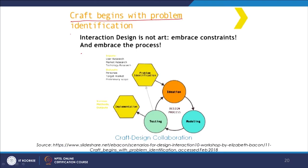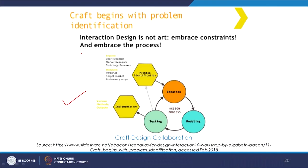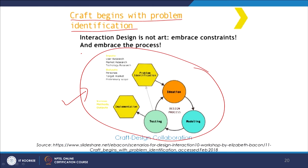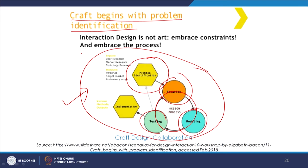Now looking at different craft design processes and process-based interventions in the craft sector, another diagram talks about how craft begins with problem identification. In this chart, the process is explained with problem identification at the centre, followed by ideation, then modelling and testing, and then a network between these, and finally implementation. There are also constant inputs: user research, market research, technology research; and in terms of outputs there are target markets, personas, and a preliminary scope of the process. These kinds of diagrams and process charts help understand the interlinkages between different stakeholders and components and the step-by-step process.